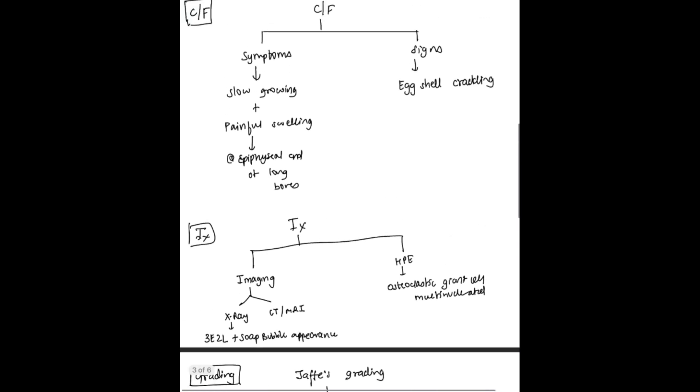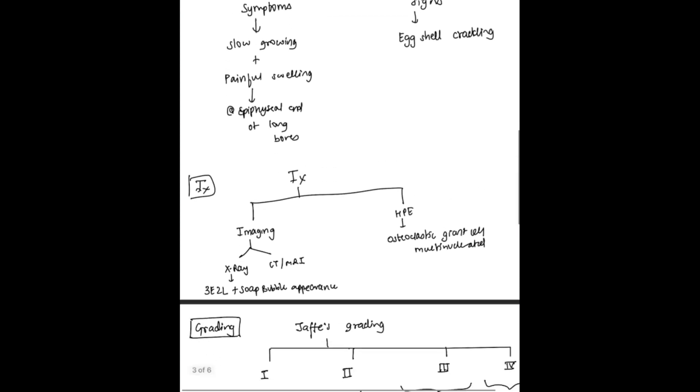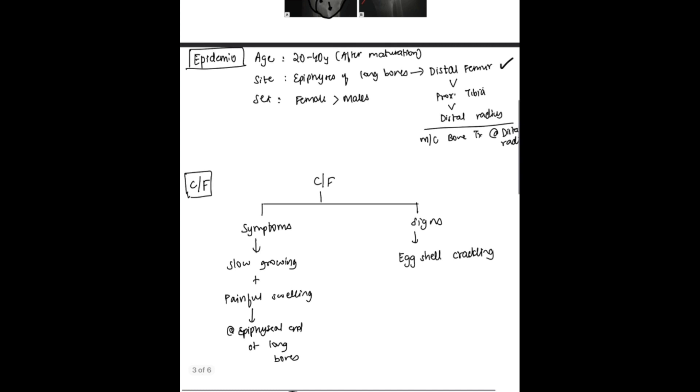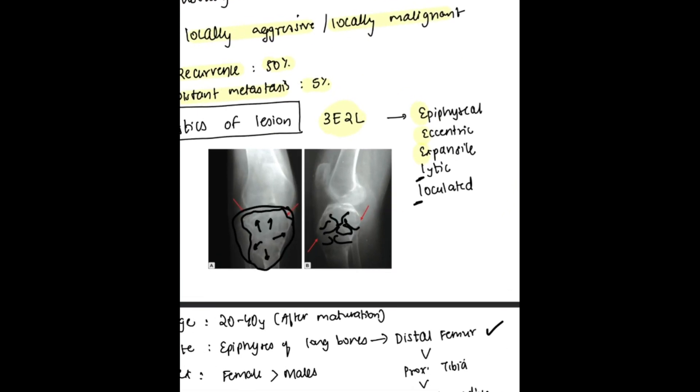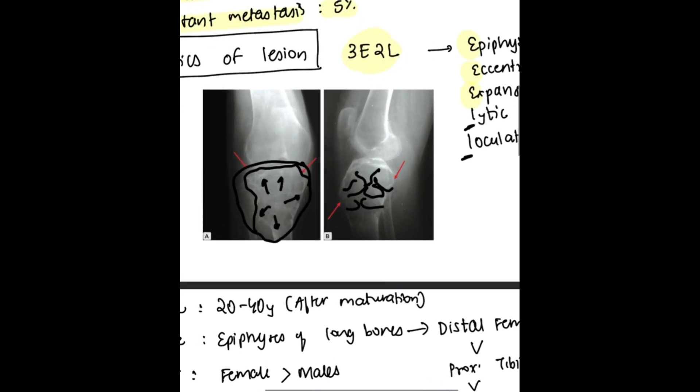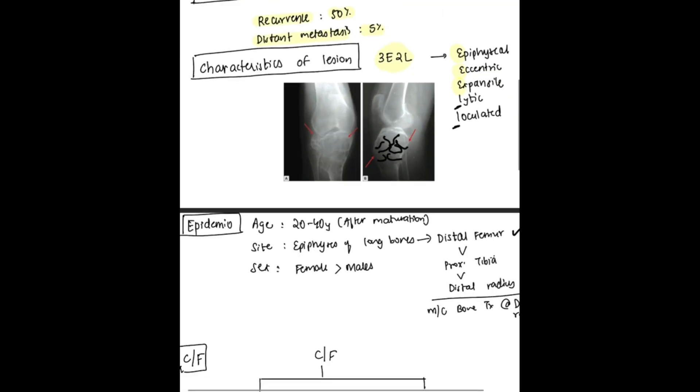Coming to investigations: imaging and biopsy, that is histopathological examination. Imaging includes X-ray and CT/MRI. X-ray may show 3E2L as we saw here: epiphyseal, eccentric, expansile, lytic, and loculated. Plus this appearance is known as soap bubble appearance. You can easily see in the diagram that it appears like soap bubbles.